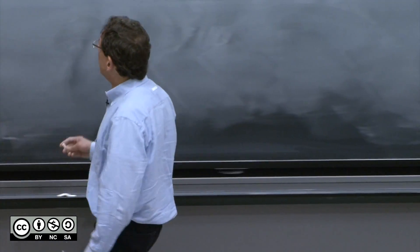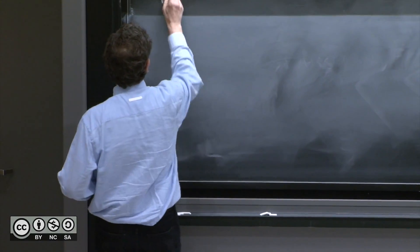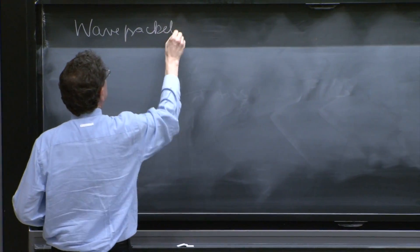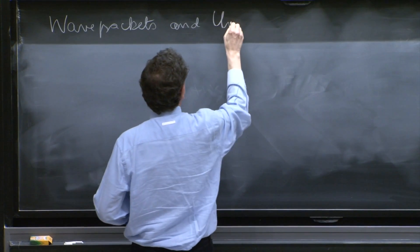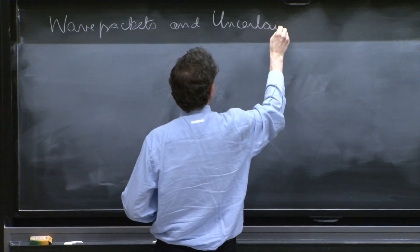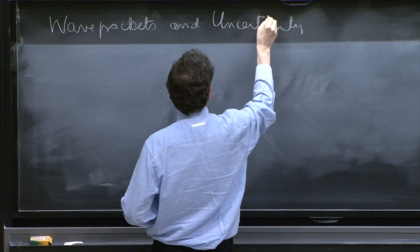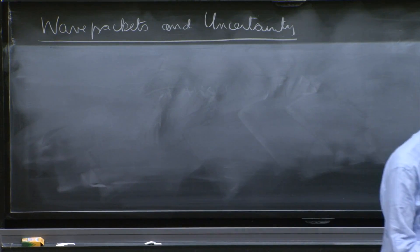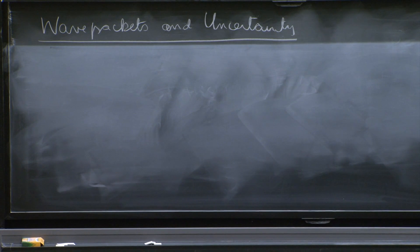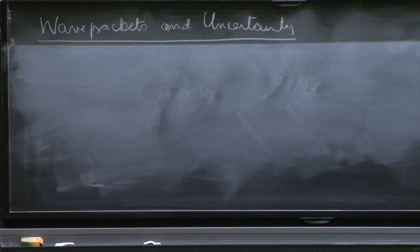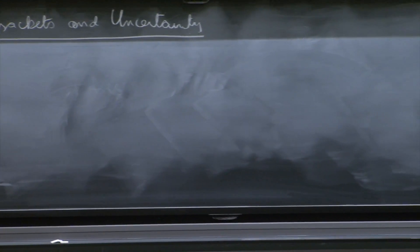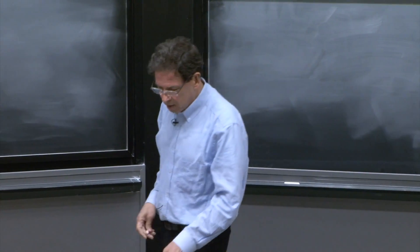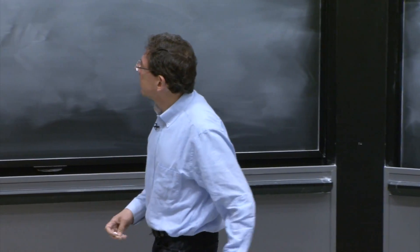We'll begin by discussing wave packets and uncertainty. So it's our first look into this Heisenberg uncertainty relationship. And to begin with, let's focus at a fixed time, t equals 0. So we'll work with packets at t equals 0.